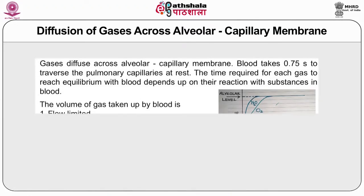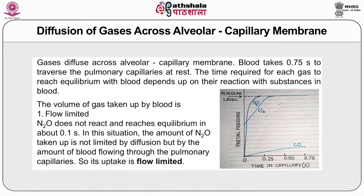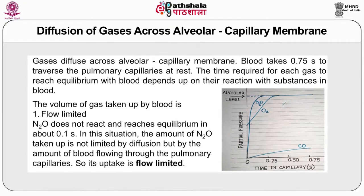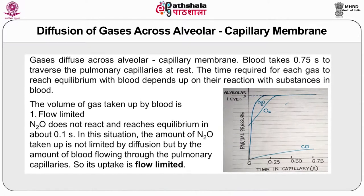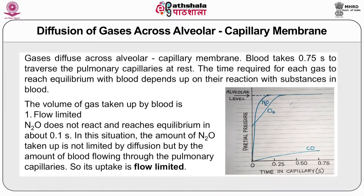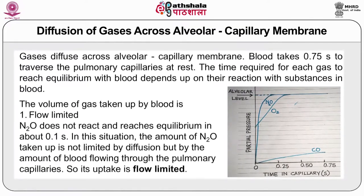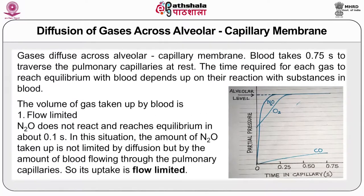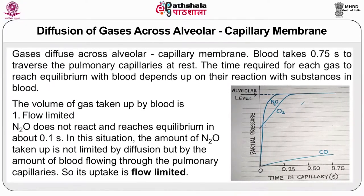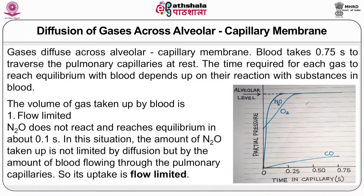Diffusion of gases takes place across the alveolar-capillary membrane. Blood takes only 0.75 seconds to travel through the pulmonary capillaries at rest. The time required for each gas to reach equilibrium with blood depends upon its reaction with substances in blood. The volume of gas taken up by blood is flow limited in the case of nitric oxide. Nitric oxide does not react and reaches equilibrium in about 0.1 seconds, so the amount taken up depends on blood flow through pulmonary capillaries — its uptake is called flow limited.